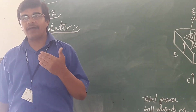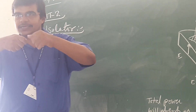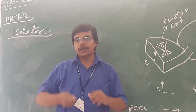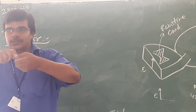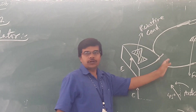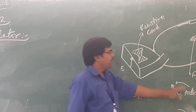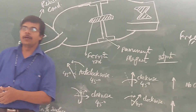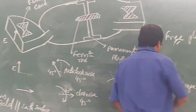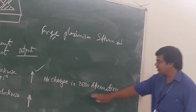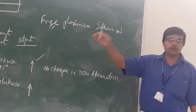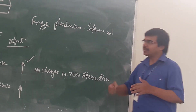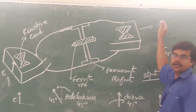In the gyrator you had 90 degree clockwise rotation from the twist; in the isolator you have anti-clockwise 45 degrees. After passing through the ferrite rod, you get a further clockwise rotation of 45 degrees. At the output there is no change, meaning zero attenuation. Whatever power you give at port 1, all the power comes out at port 2 with no attenuation.